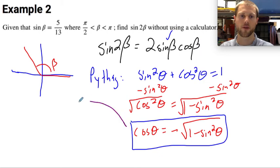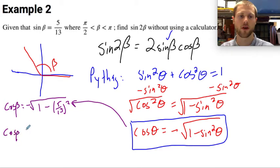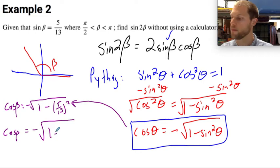So I'm going to jump over here now. I'm going to say that the cosine of beta is going to equal the negative square root of 1 minus sine squared of beta. So that's going to be 5 thirteenths squared. All right, so the cosine of beta is going to equal negative square root of 1 minus 25 over 169.